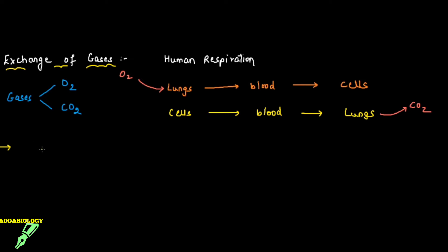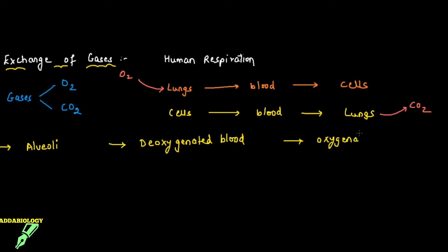What you need to do is observe the video very carefully till the end so that you understand how the exchange of gases takes place at the alveoli level, at the deoxygenated blood level, at the oxygenated blood level, and at the tissue level. Now at the tissue level, we are going to focus on the deoxygenated tissues only.